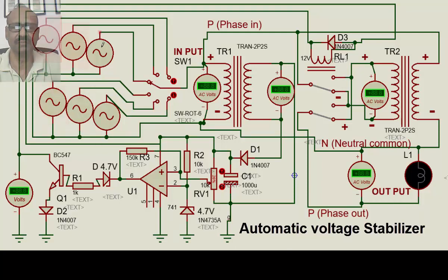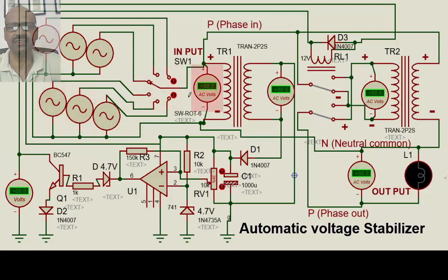We have taken some alternators here for different voltages, because this voltage stabilizer faces different input voltages. We have taken certain voltage sources — alternators — so we can change this switch to any position, and the input voltage will change accordingly, which will be displayed here.